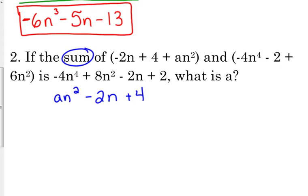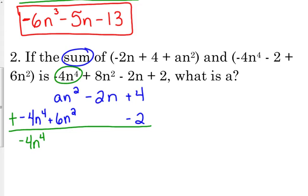My second expression has n to the 4th, so that goes in front, negative 4n to the 4th, plus 6n squared is my next highest, and then minus 2. So we're adding these two, we're adding these together, so negative 4n to the 4th, we've got that in the answer. When we add these two right here, we've got 6 plus a, and that's supposed to equal 8. So can we figure out what a is? 2.